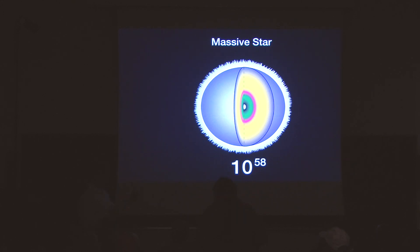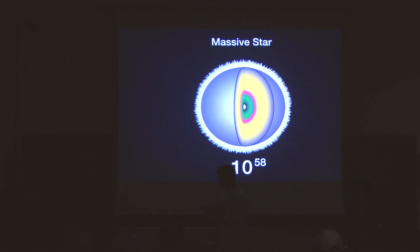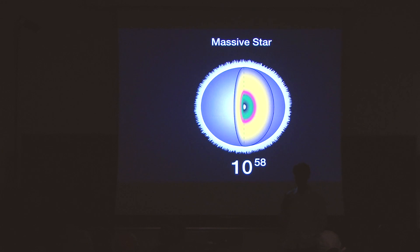Those massive stars have 10 to the 58 atoms inside them, significantly more than what we have in our bodies. They go through a constant battle against gravity — gravity wants to compress them, and in order to survive, they burn elements, fusing lighter elements into progressively heavier ones. That generation of heat keeps the fight against gravity. Iron — which gives redness to our blood — is the most bound nucleus in the universe. Once fusion reaches iron, it can no longer fight gravity, and gravity wins. The core of these stars collapses.